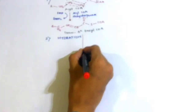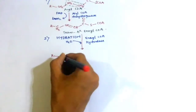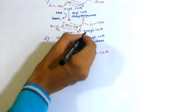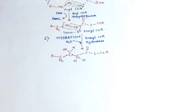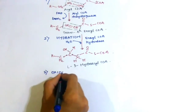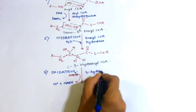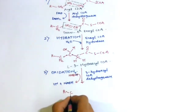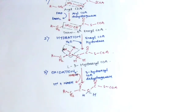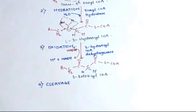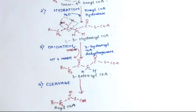Hydration involves the addition of a water molecule to trans-delta-2-enoyl-coenzyme A in the presence of enoyl-coenzyme A hydratase enzyme. This leads to conversion of unsaturated fatty acid to saturated fatty acid. The resulting structure is known as L-3-hydroacyl-coenzyme A. The second oxidation step involves conversion of NAD+ to NADH + H+, which involves enzyme 3-hydroacyl-coenzyme A dehydrogenase, and there is formation of a double bond on the beta carbon. This structure is known as 3-ketoacyl-coenzyme A.